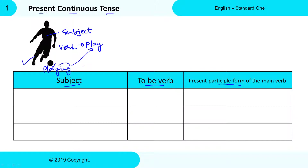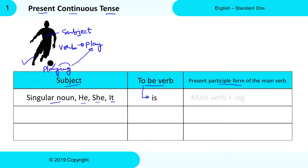Whenever the Subject contains singular nouns or pronouns like he, she, and it, always use 'is' as the to-be Verb after the Subject. After the to-be Verb, write the Present Participle Form of the Main Verb. You can do this by adding -ing to the Main Verb. Don't worry about it now — I am only explaining rules.